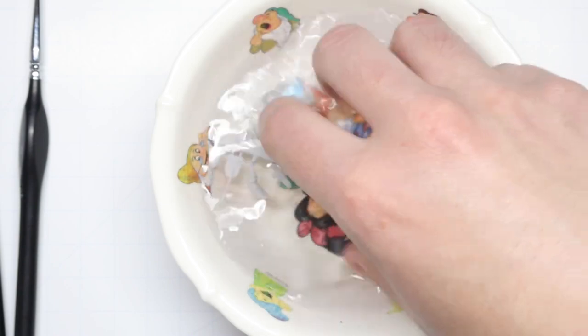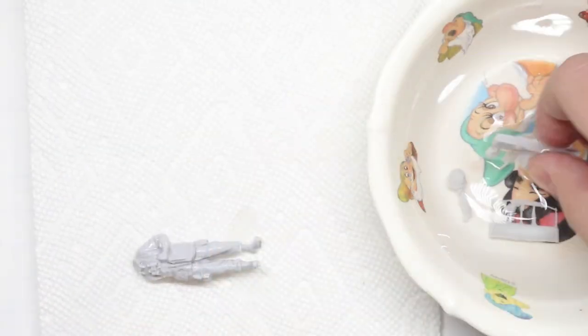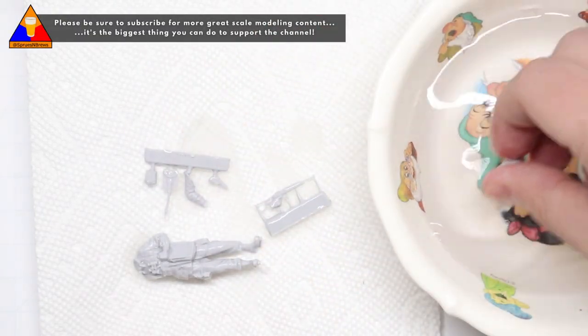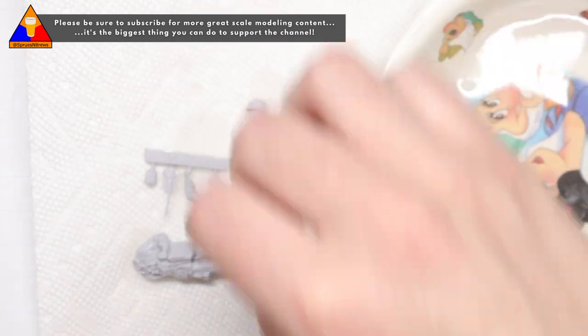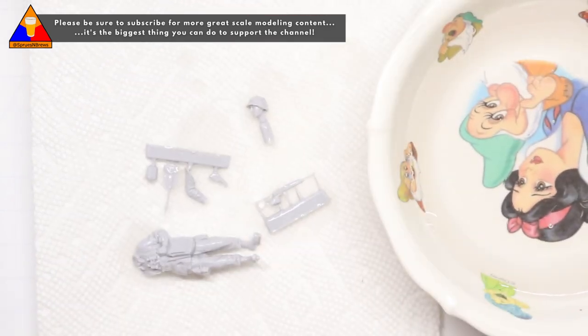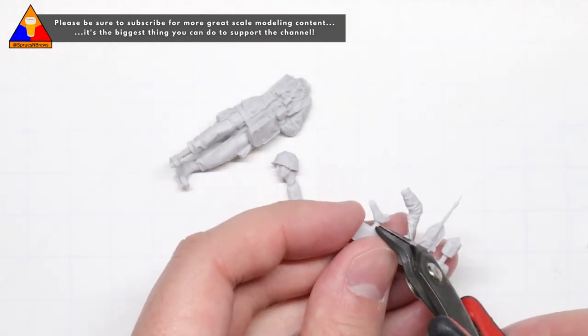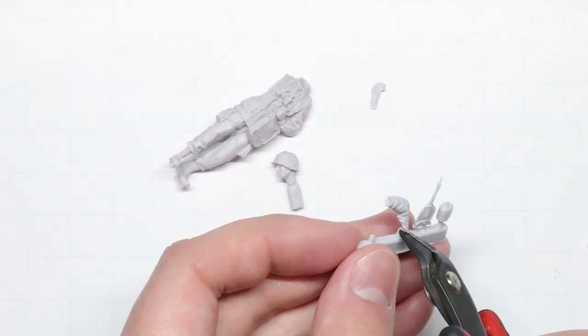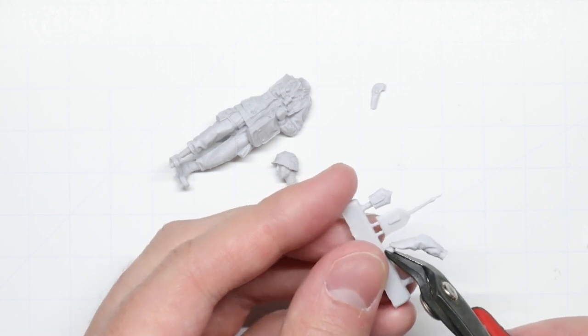After a quick rinse off camera, we can dry off our parts and get to assembly. We can use our sprue snippers to carefully remove the individual parts from the pouring blocks. Any excess material left over can be easily removed with a sharp hobby knife.